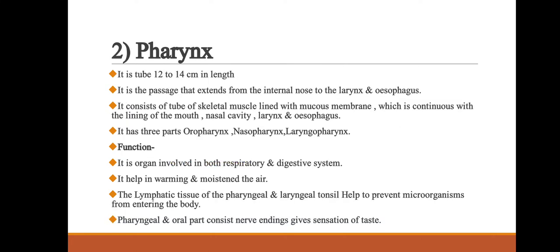The next part of the respiratory system is the pharynx. It is a tube about 12 to 14 centimeters in length. It is the passage that extends from the internal nose to the larynx and oesophagus. It consists of a tube of skeletal muscle lined with mucous membrane, continuous with the lining of the mouth, nasal cavity, larynx, and oesophagus. It has three parts: oropharynx, nasopharynx, and laryngopharynx.